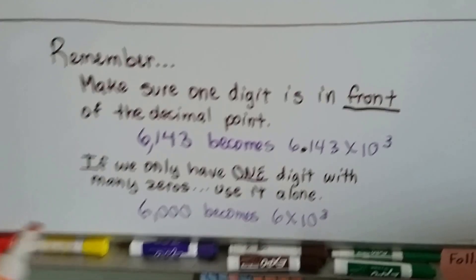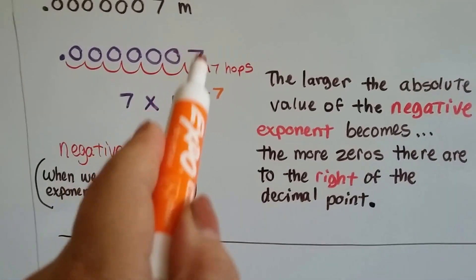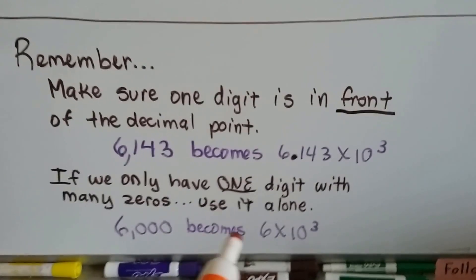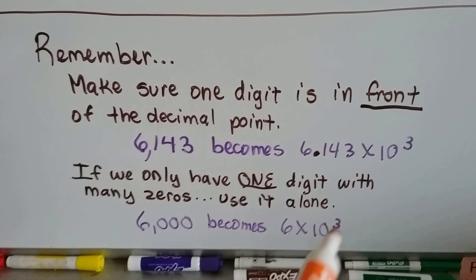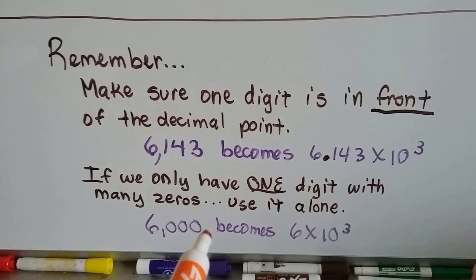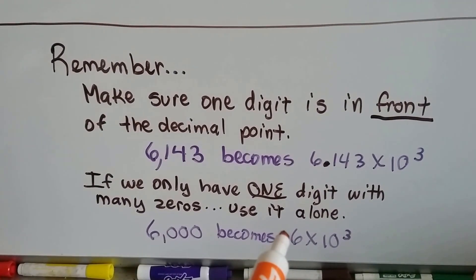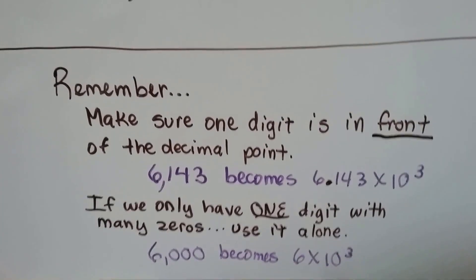That was 3 hops. If we only have one digit, like we did up here with the 7, there's no other numbers except the 7 and a bunch of zeros, then we just use that one digit. 6,000 would just become 6 times 10 to the 3rd power. The decimal moves from back here, 1, 2, 3 hops to behind the 6. So the 3 hops gives us a 3 as an exponent and we have 6 times 10 to the 3rd.